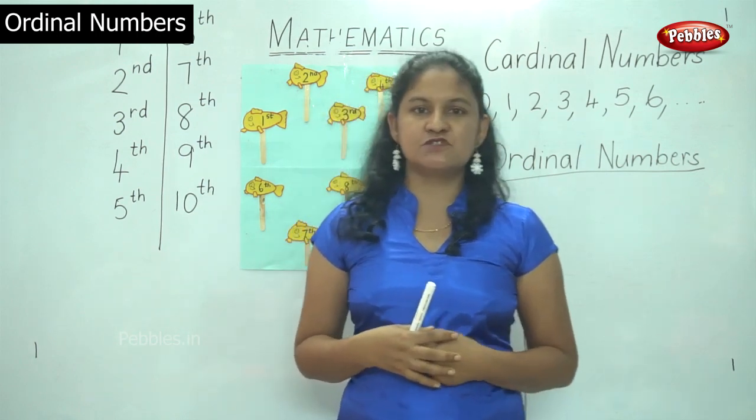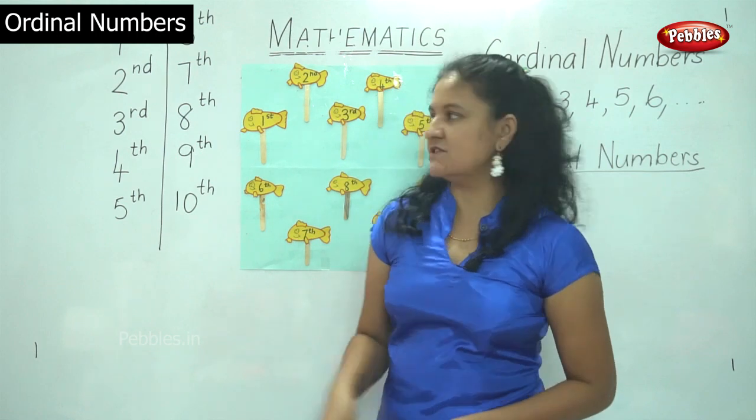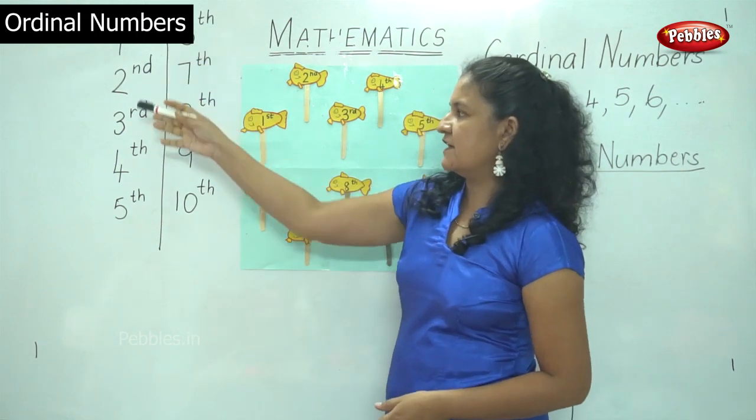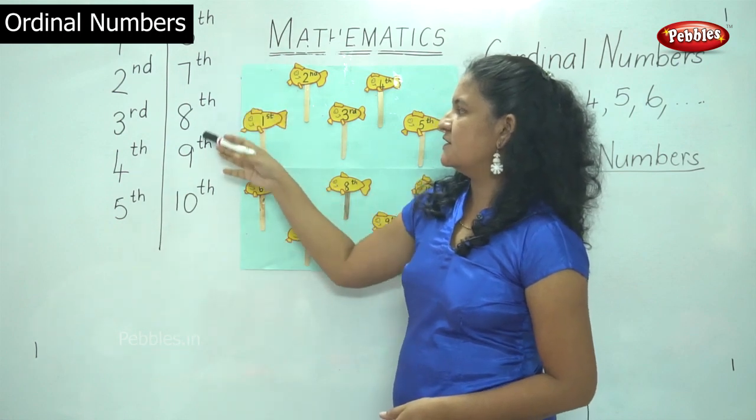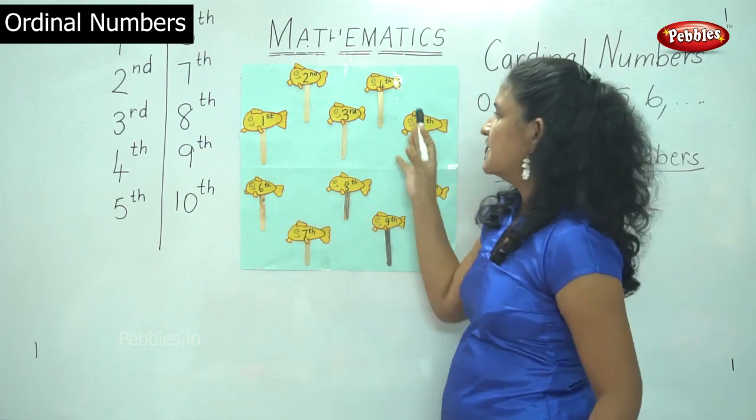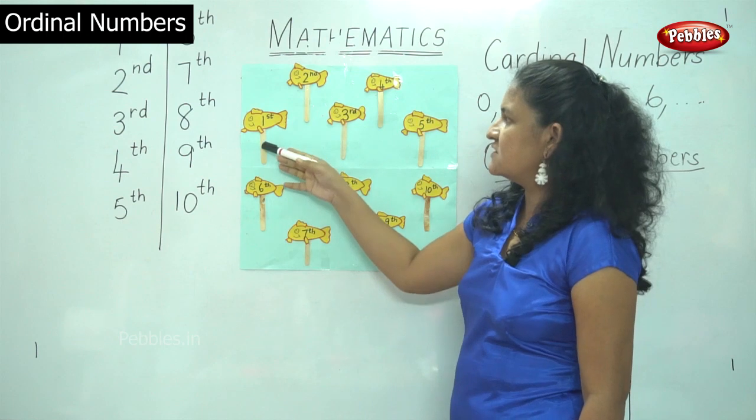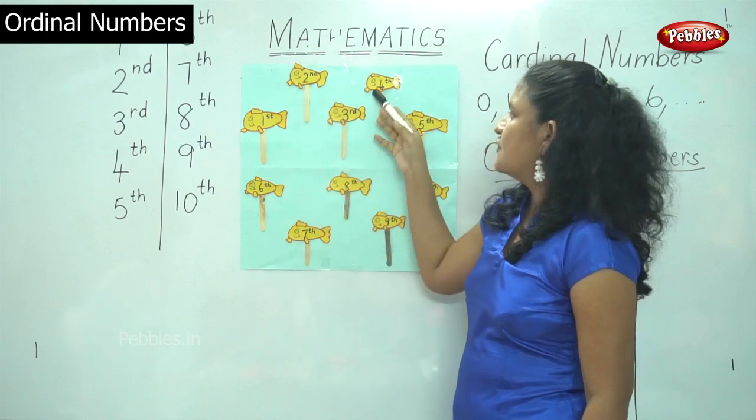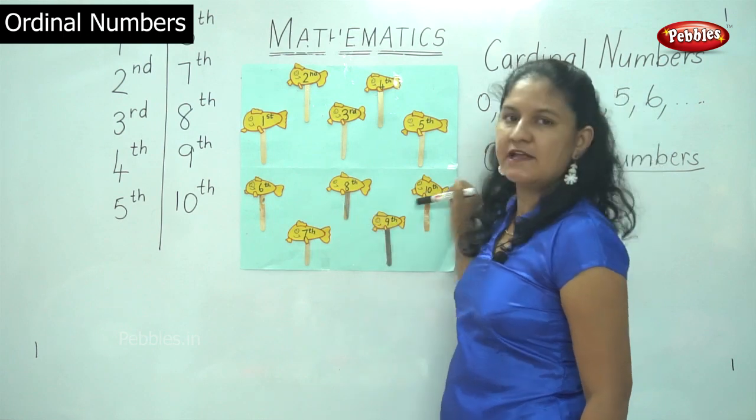But when it comes to positioning people or things, we use the ordinal numbers which is first, second, third, fourth, fifth, sixth, seventh, eighth, ninth and tenth and so on. So I have placed these fish in its ordinal numbers from first, second, third, fourth, fifth, sixth, seventh, eighth, ninth and tenth.